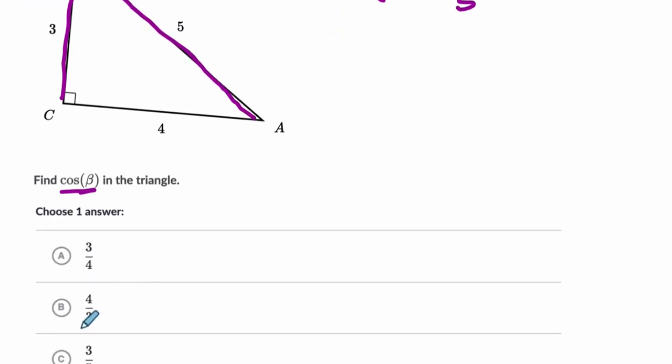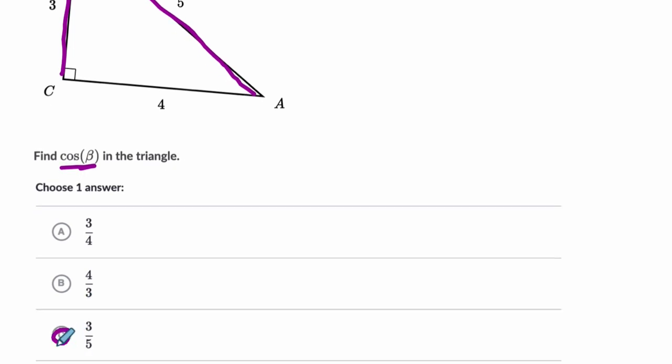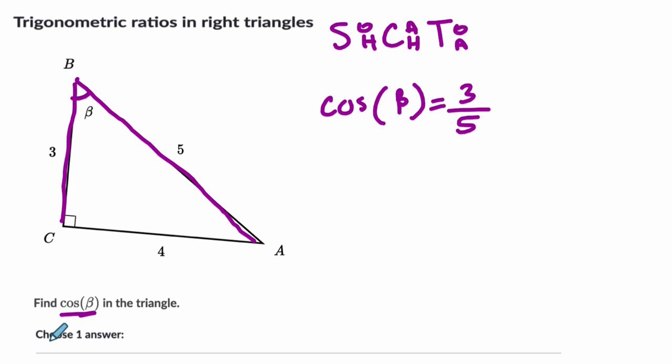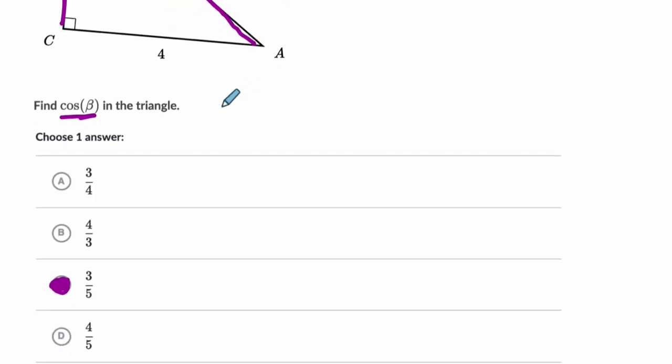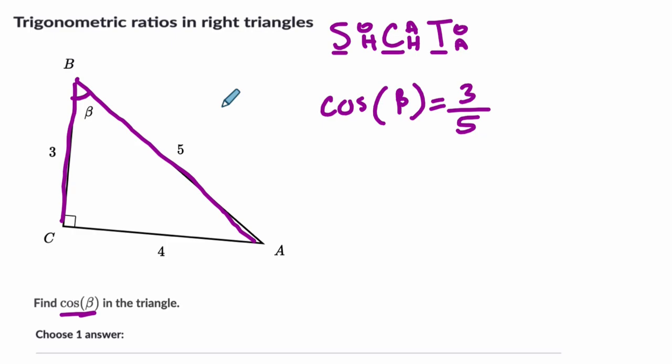The word cosine describes that ratio and communicates with other people what ratio of the triangle we're talking about. In this case, it's 3 out of 5. So sine, cosine, and tangent, and all the trig ratios, these words that we have, quickly summarize the ratios that we're talking about. It's meant to clarify our communication so we know exactly what the intent is. Thank you.